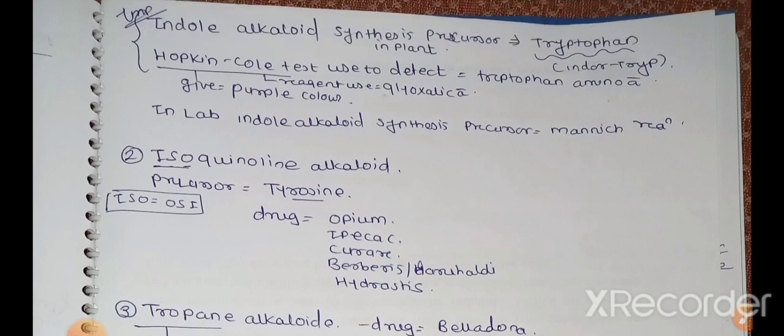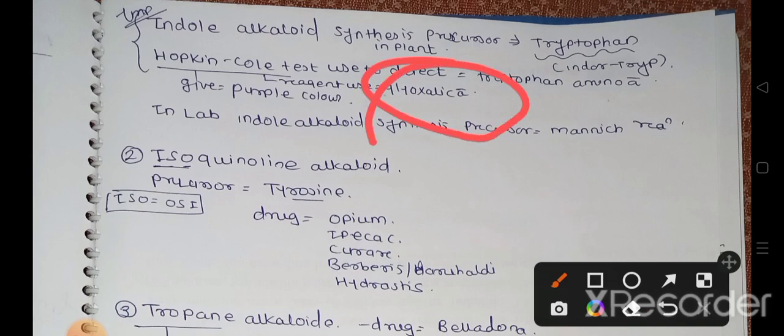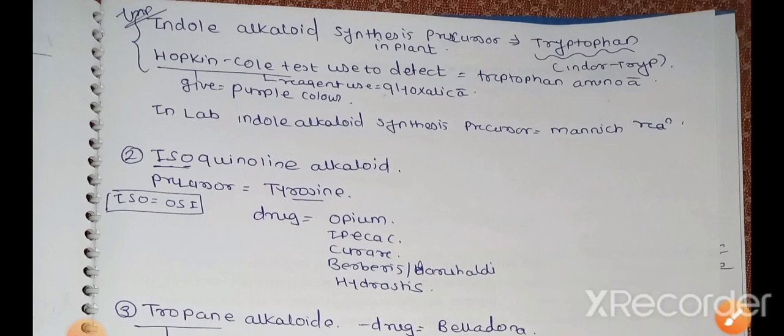So I just told you Hopkins cold test is used to detect tryptophan amino acids, which we use as precursor. And it gives purple color. When we have to synthesize indole alkaloids on lab scale, at that time the precursor base we use is called Mannich reaction. Mannich base is used for the synthesis of indole alkaloids on lab scale.